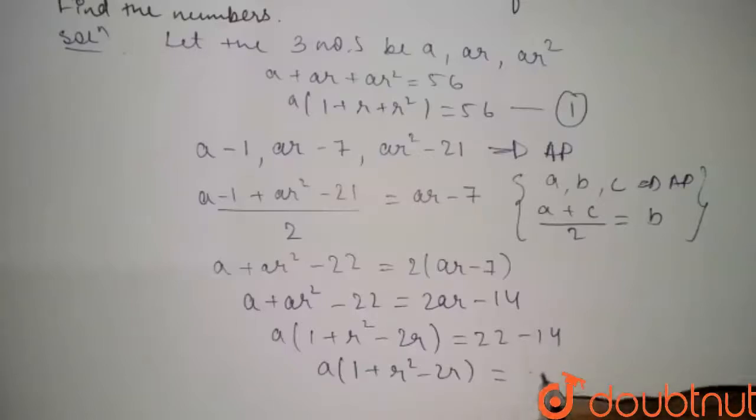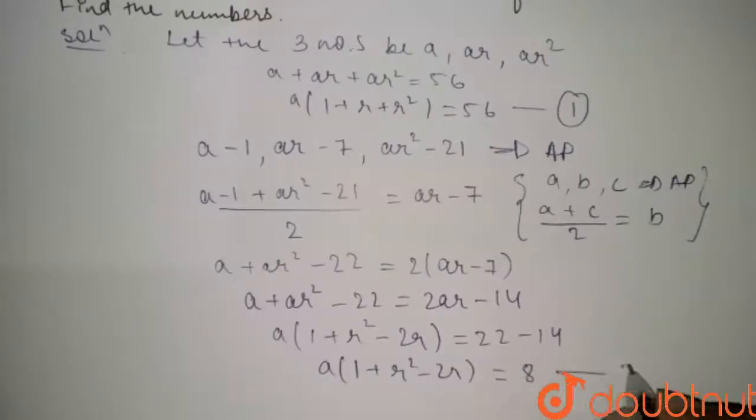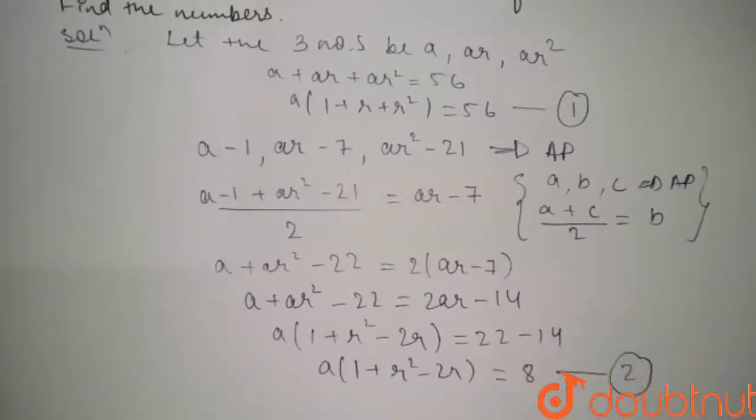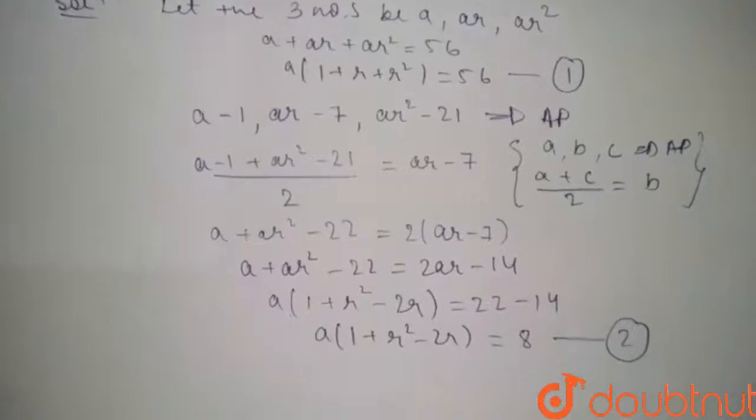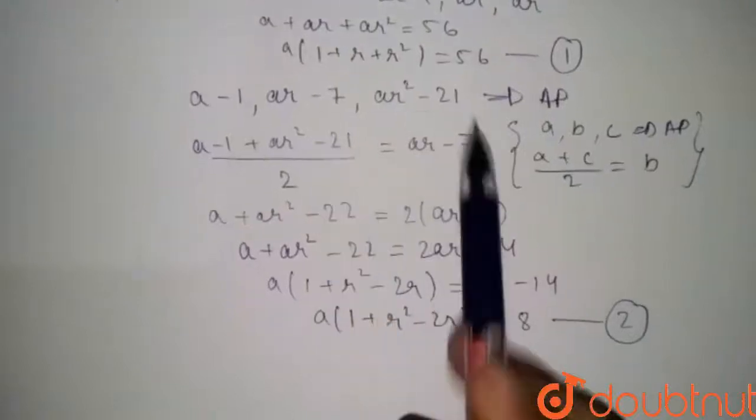This simplifies to a(1 + r² − 2r) = 8. Let's call this equation number 2.